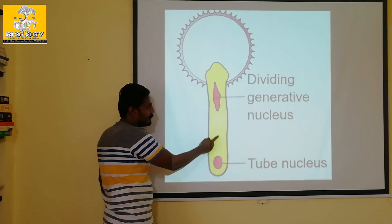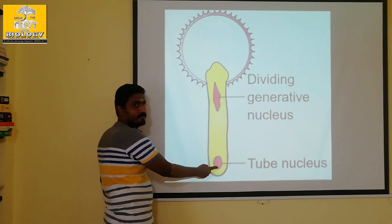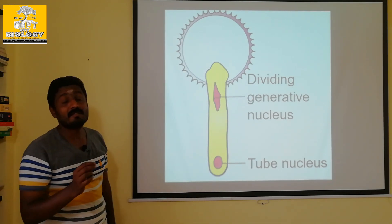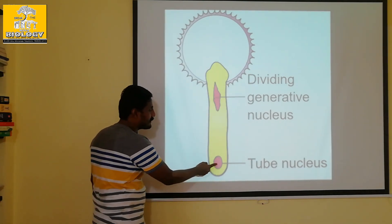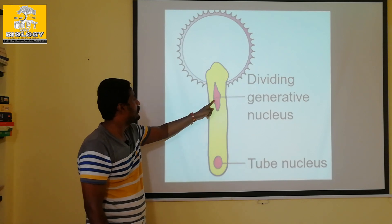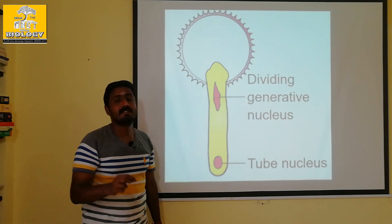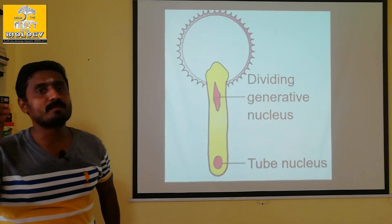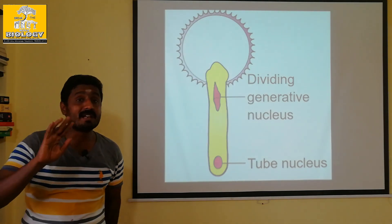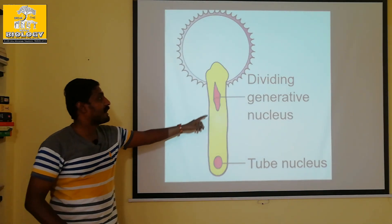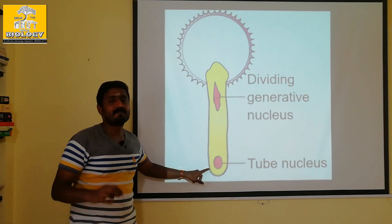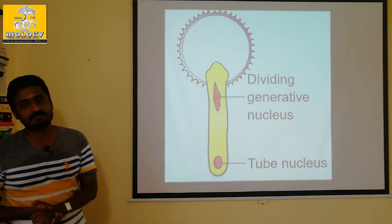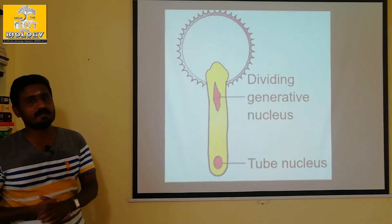The vegetative nucleus is the tube nucleus — this is the tube nucleus, this is the movement. This is the generative nucleus. The two male gametes are produced from it. This is the fourth step.